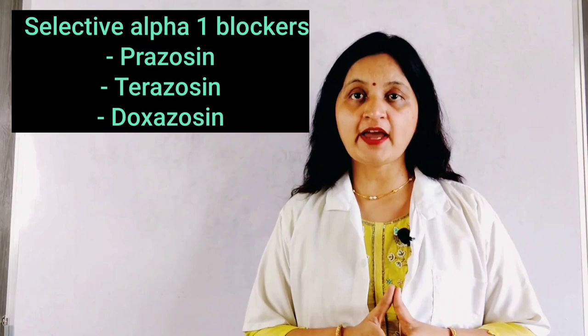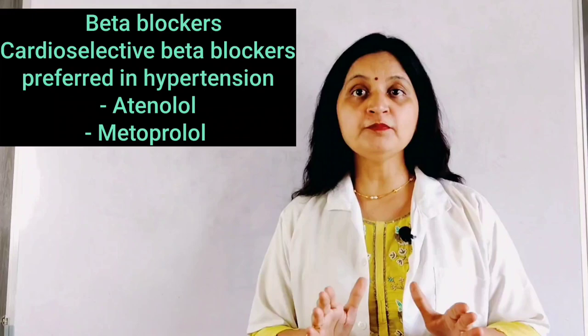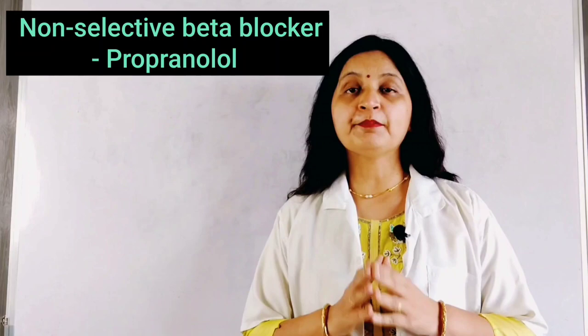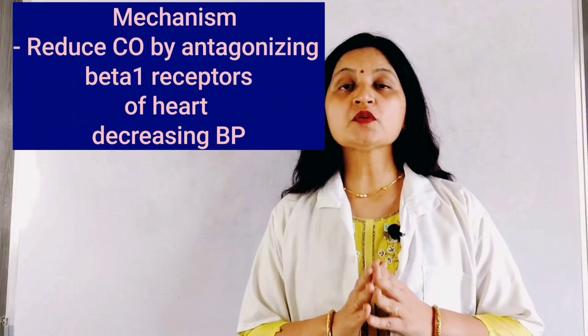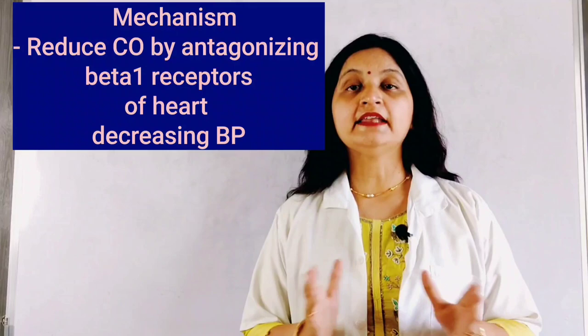Cardioselective beta blockers include atenolol and metoprolol. Propranolol, which is a non-selective beta blocker acting on both beta-1 and beta-2 receptors, can be used for lowering blood pressure, but the preferred drugs are cardioselective beta blockers. These have predominant action on beta-1 receptors of the heart, decreasing the cardiac output and blood pressure, and thereby acting as antihypertensive agents.